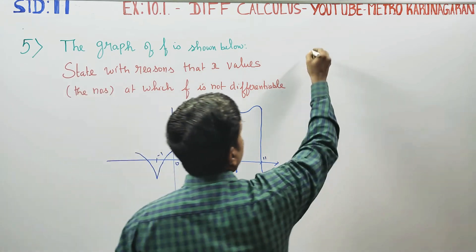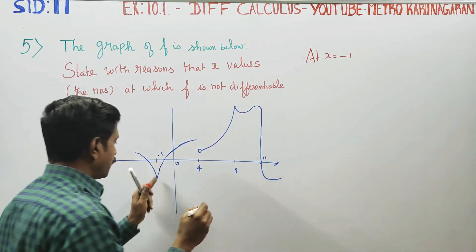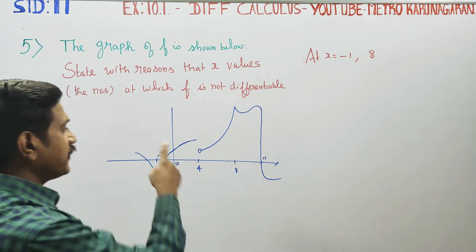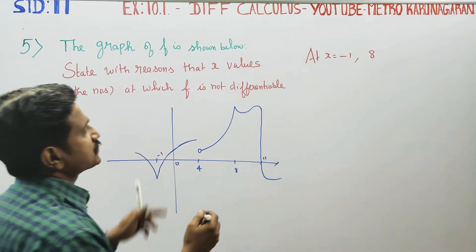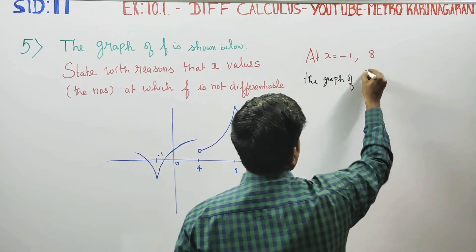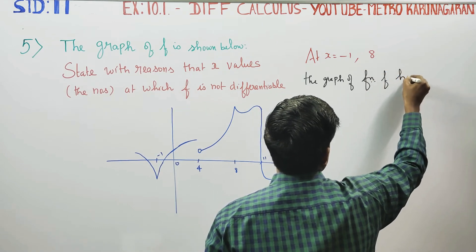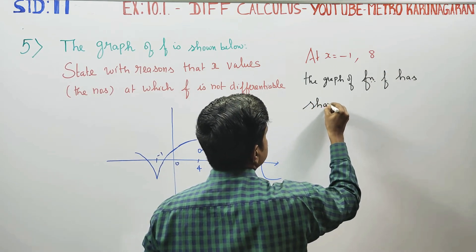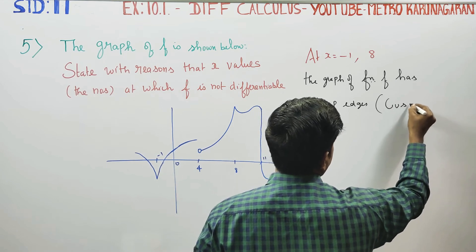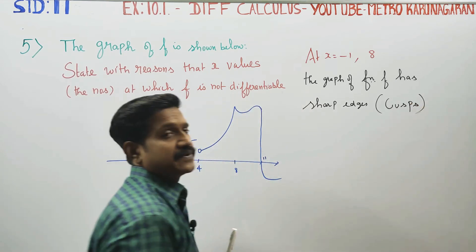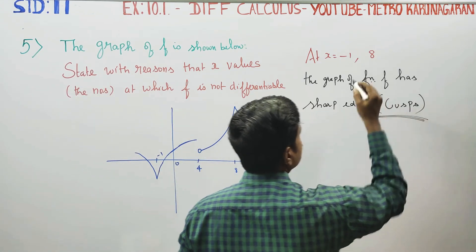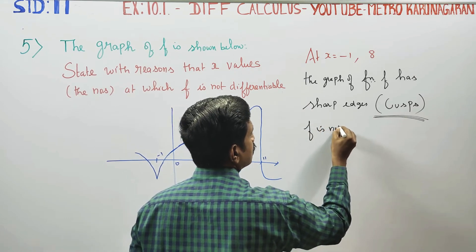At x equals minus 1 and at x equals 8, the graph of function F has sharp edges. Sharp edges are technically called cusps. When there are cusps or sharp edges, F is not differentiable.